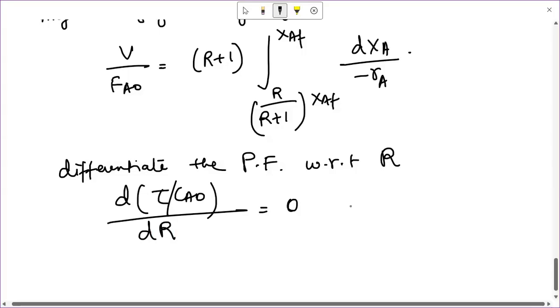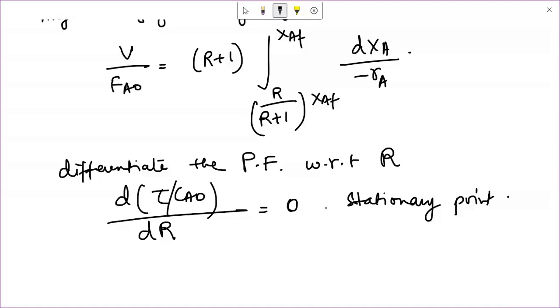So you can simply write d(tau*CA/CA0)/dr equals to zero. You will get the stationary point. Now this tau by CA0 is obviously equals to V by FA0. I hope this is not a very big question over here. The bigger question is to determine the stationary point. So we are actually using only the necessary condition to find the optimum point of recycle ratio.